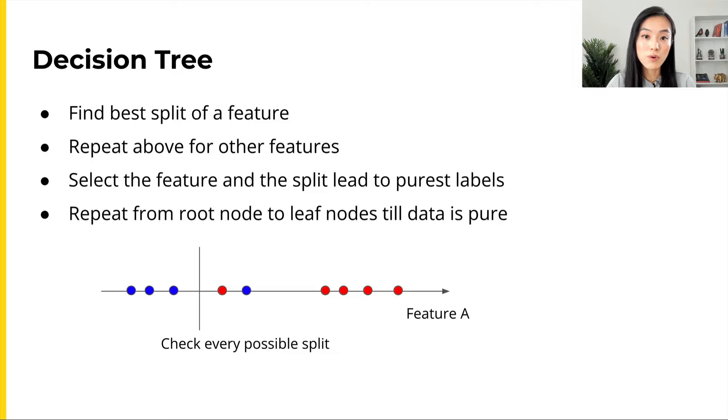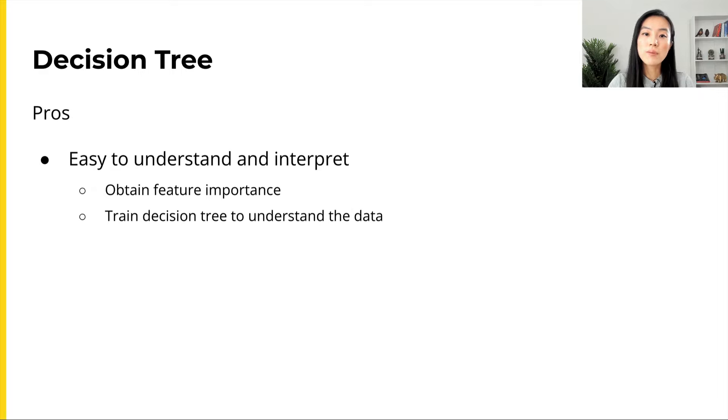Now you understand how decision trees work, let's talk about some pros and cons of decision trees. The first advantage of a decision tree is that it's easy to understand and interpret. It is often helpful to look at the resulting tree to see which features are important to the target and how the target is derived from the split.